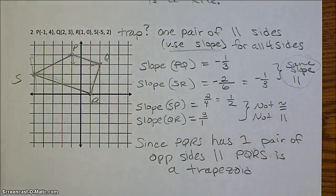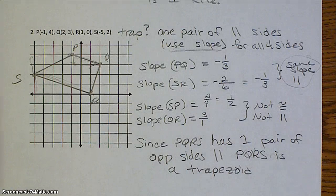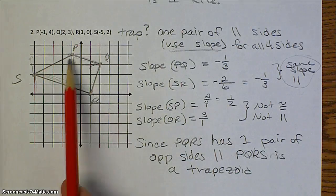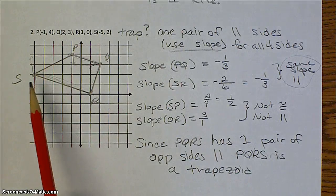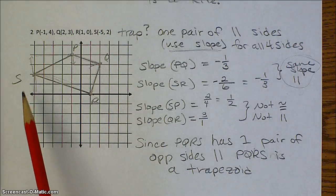So therefore, we can say since PQRS has one pair of opposite sides that are parallel, it is a trapezoid, and it's not isosceles since QR and PS are not congruent. And you can always test that with the distance formula.